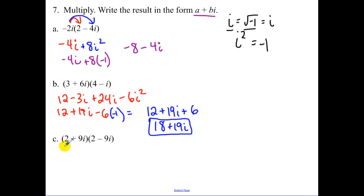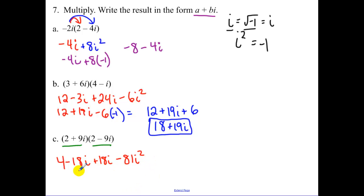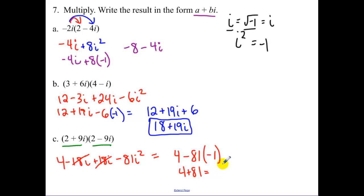Notice: here we're multiplying two conjugates together — this makes our life super easy. Using FOIL, the middle terms cancel since they have opposite signs. So we have 4 minus 81 × i², and since i² = −1, that's 4 + 81 = 85. When you multiply complex conjugates, your answer ends up being just a real number with no imaginary part — that's important.